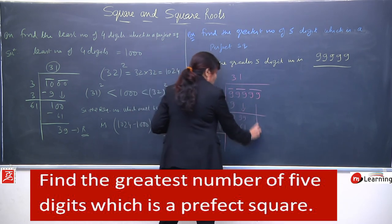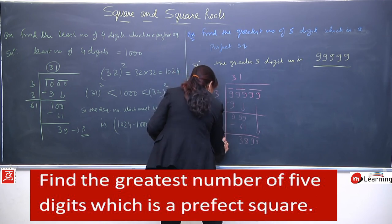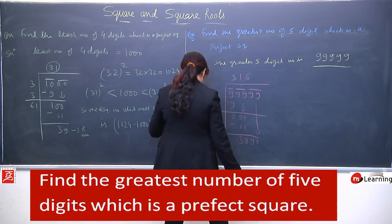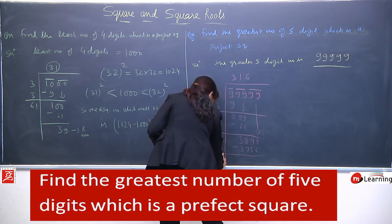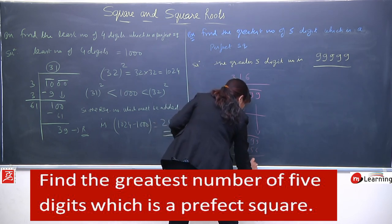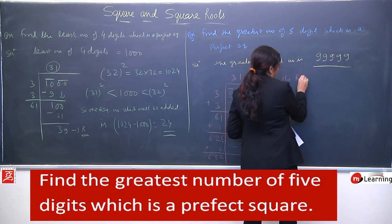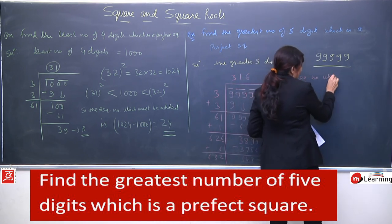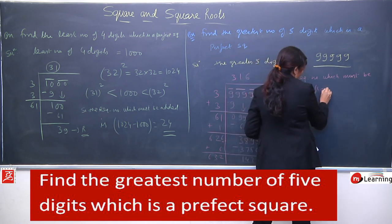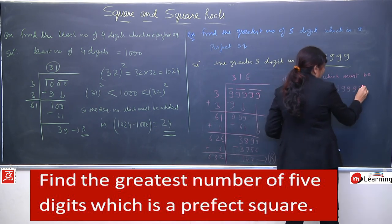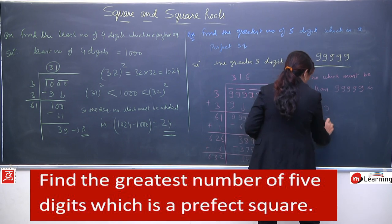Humne copy kiya. Yahan par hum aisa number sochenge - let's say humne 6 liya. 266 times 6 is 1596. Isko subtract karenge. Yahan par 6 hum add kar denge. Isko jab humne subtract kiya, toh remainder hamare paas aaya 143. The required number which must be subtracted from the greatest 5-digit number, means 99999, is 143.